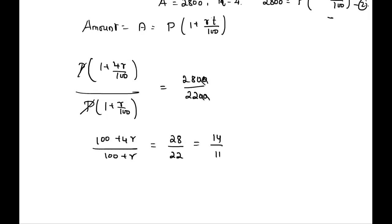Now cross multiply. We get 11 times (100 plus 4R) equals 14 times (100 plus R), which implies 1100 plus 44R equals 1400 plus 14R.